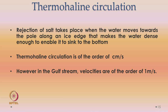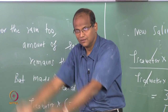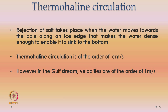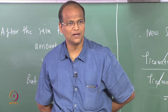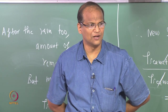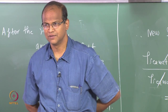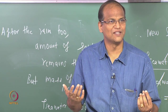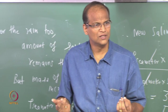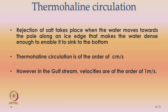Rejection of salt occurs when water moves toward the pole along an ice edge, making the water denser, which then sinks. Thermohaline circulation velocities are of the order of centimeters per second. However, in the Gulf Stream, velocities reach about 1 meter per second. The Gulf Stream is responsible for making Europe highly habitable — even at 40–50 degrees latitude, it maintains an equitable climate. Civilization started in Eurasia partly because of this.